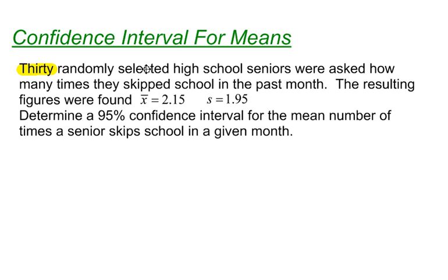30 randomly selected high school seniors were asked how many times they skipped school in the past month. The resulting figures were given like this: the sample mean was 2.15 and the sample standard deviation was 1.95. Determine a 95% confidence interval for the mean number of times a senior skips school in a given month.